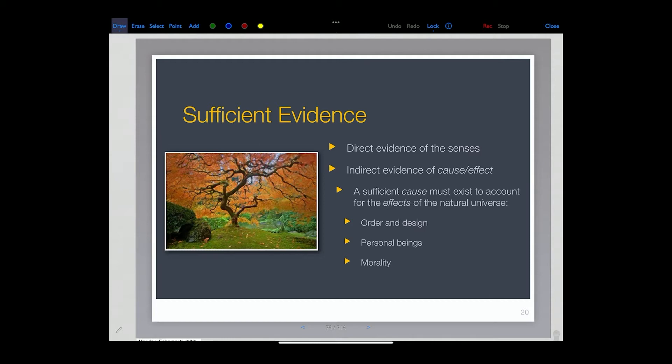Well, we've been getting what I regard to be sufficient evidence when we talked about the direct evidence of the senses and the indirect evidence of cause and effect, that we're saying a sufficient cause must exist to account for the effects of the natural universe. And what are those effects? Order and design is obviously all around us, or what appears to be order and design.